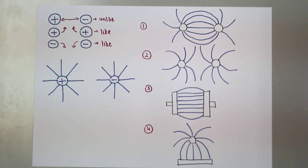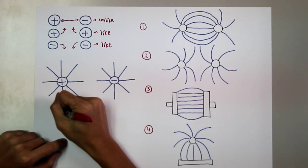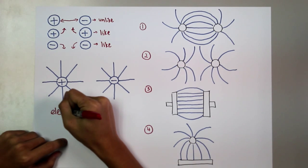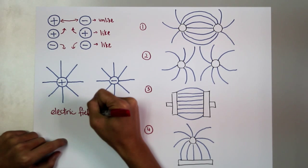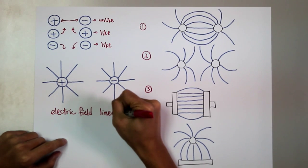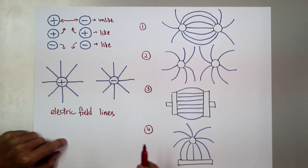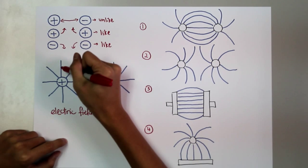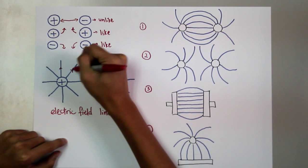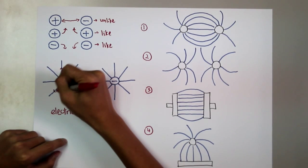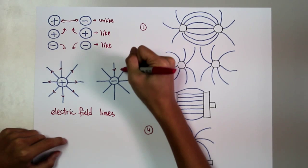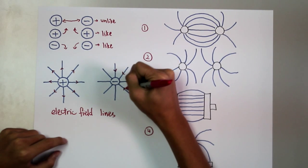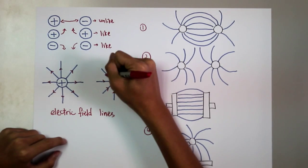These are the diagrams of electric field lines for positive and negative charges. For positive charge, the field lines are directed away from the charge, while for negative charge, the field lines are directed towards the charge.